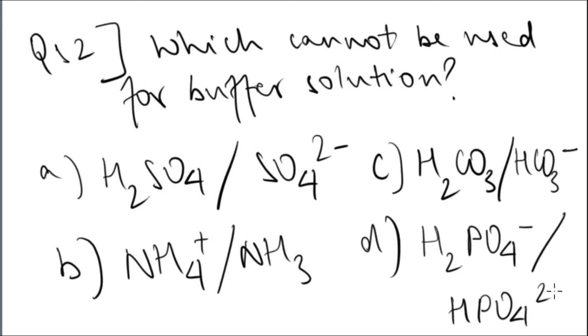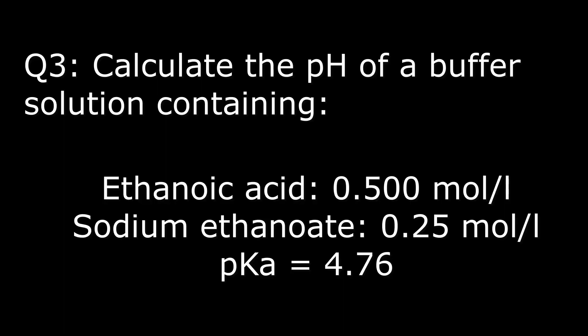Question three: find the pH of a buffer solution containing 0.5 mol/L of ethanoic acid and 0.25 mol/L of sodium ethanoate (its conjugate salt), with the pKa being 4.76.